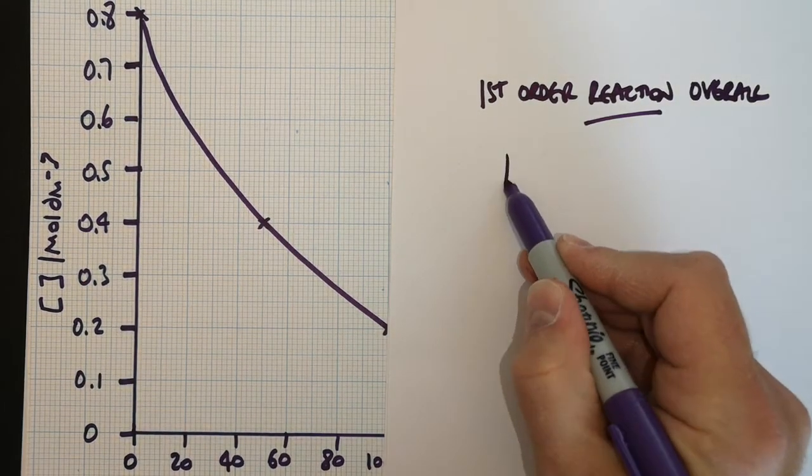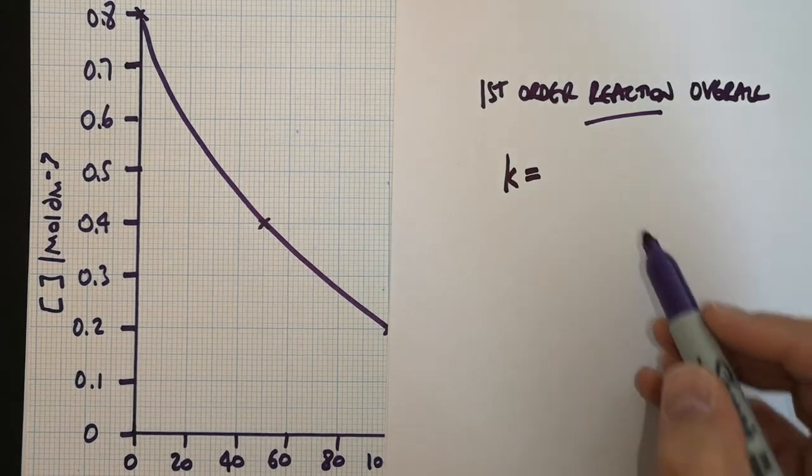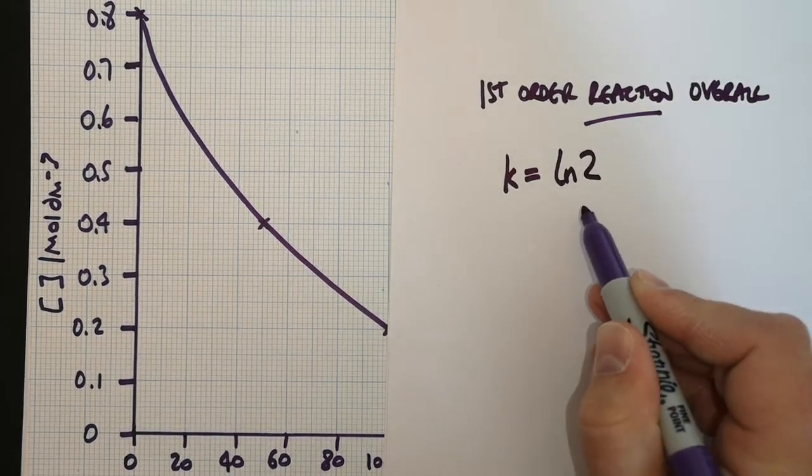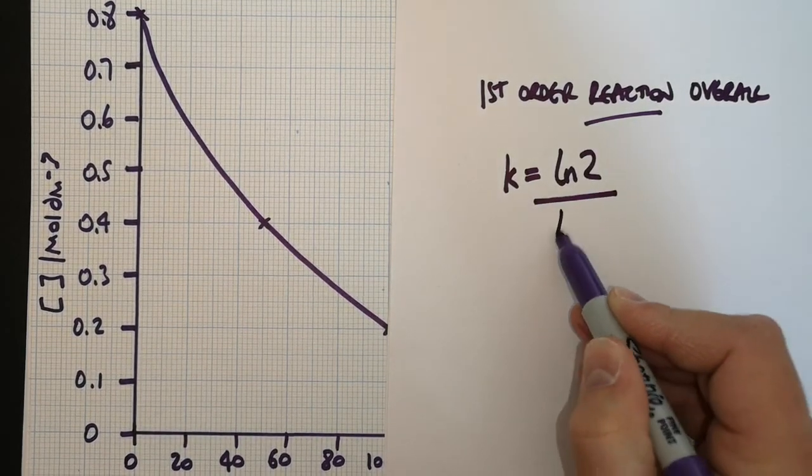Then we can use the half-life in order to calculate the rate constant. So there is a relationship which is k equals ln2, so the natural log of 2, over the half-life.